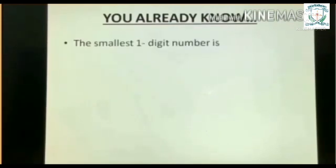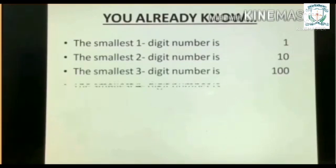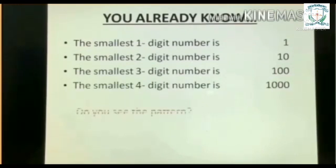You have already learned: the smallest one-digit number is 1, the smallest two-digit number is 10, the smallest three-digit number is 100, smallest four-digit number is 1000. You can see the pattern.